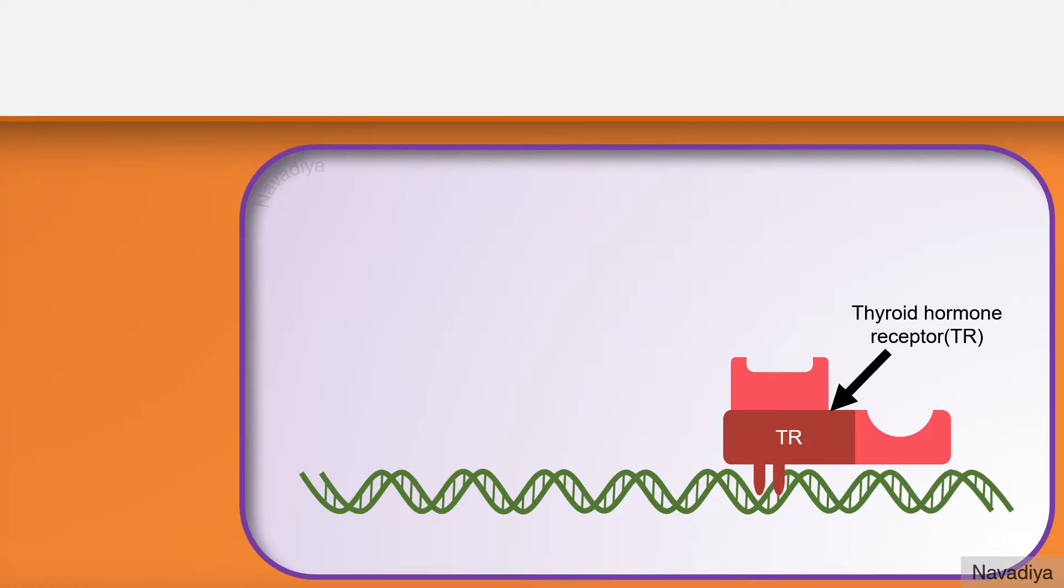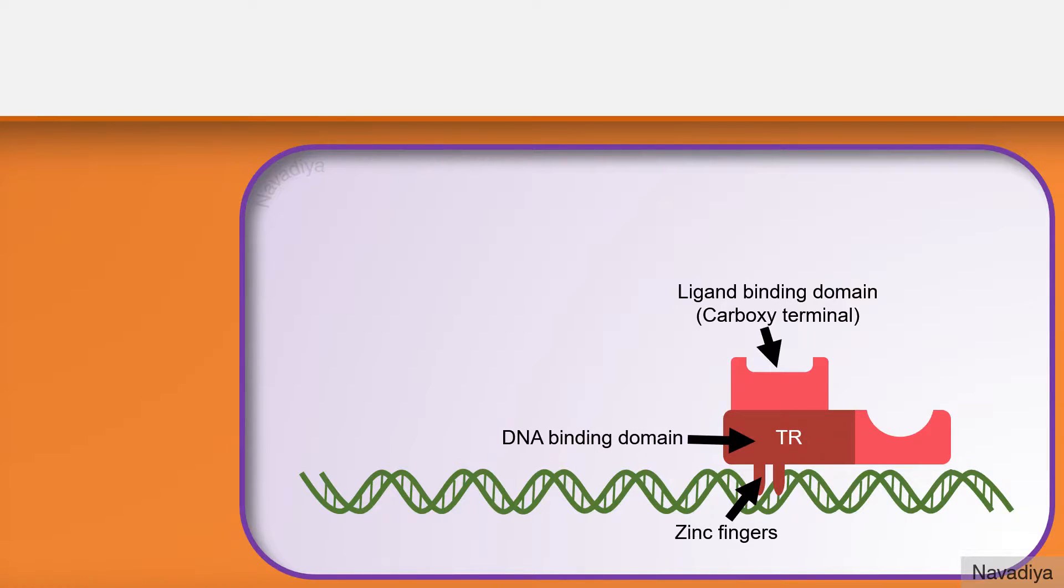And this is thyroid hormone receptor. Thyroid hormone receptors are similar to steroid hormone receptors. It has a ligand binding domain at carboxy terminal, DNA binding domain with two zinc fingers in middle part, and a transactivation domain at amino terminal.